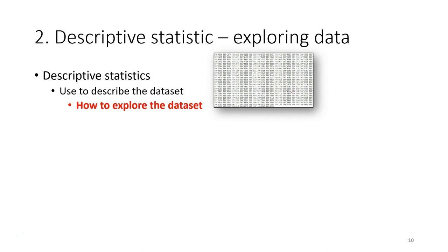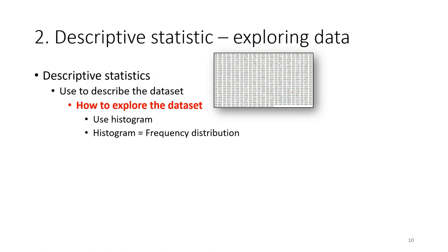One way is to summarize the data, as you learned in the last lectures. The best way to explore the data set is to use the histogram, which can be used to show the distribution of data. The histogram is essentially a frequency distribution — it shows the frequency distribution for different data values.